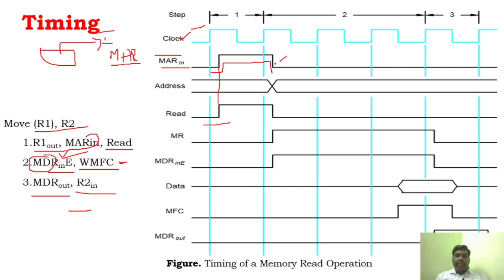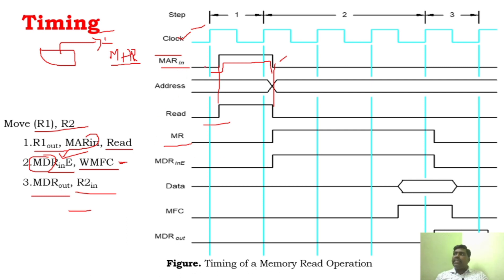At the same time as MAR is enabled, it initiates the read cycle. Once the read cycle is initiated, the processor will produce a control signal - memory read - through the internal circuit. This memory read control signal is initiated at the end of this clock cycle, as soon as the read cycle is initiated. Now, at the end of the read cycle, the content from the MAR address will be saved to MDR in. MDR is also enabled - it is ready to receive data from MAR.